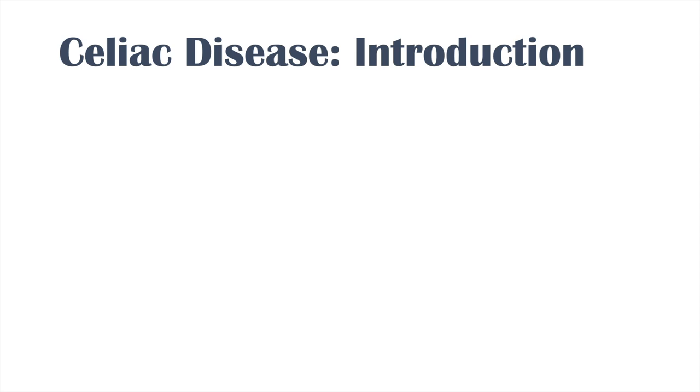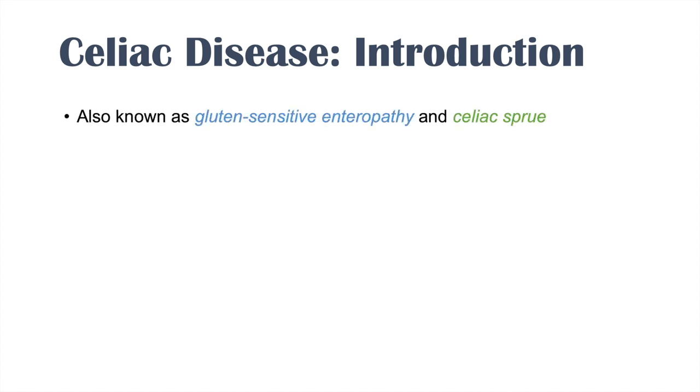Celiac disease is an autoimmune gastrointestinal condition that causes a variety of health issues including issues with bones, teeth, and skin. In this lesson we're going to talk about what this condition is, risk factors, signs and symptoms, how we can diagnose it, and how we can treat it. Celiac disease is also known as gluten-sensitive enteropathy and celiac sprue — both terms for the same condition.